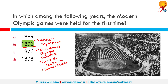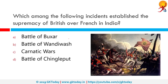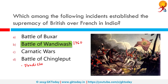Which among the following incidents established the supremacy of the British over the French? The correct answer is the Battle of Pondicherry, which was held in 1760, after which the French capital of Pondicherry fell to the British in 1761.